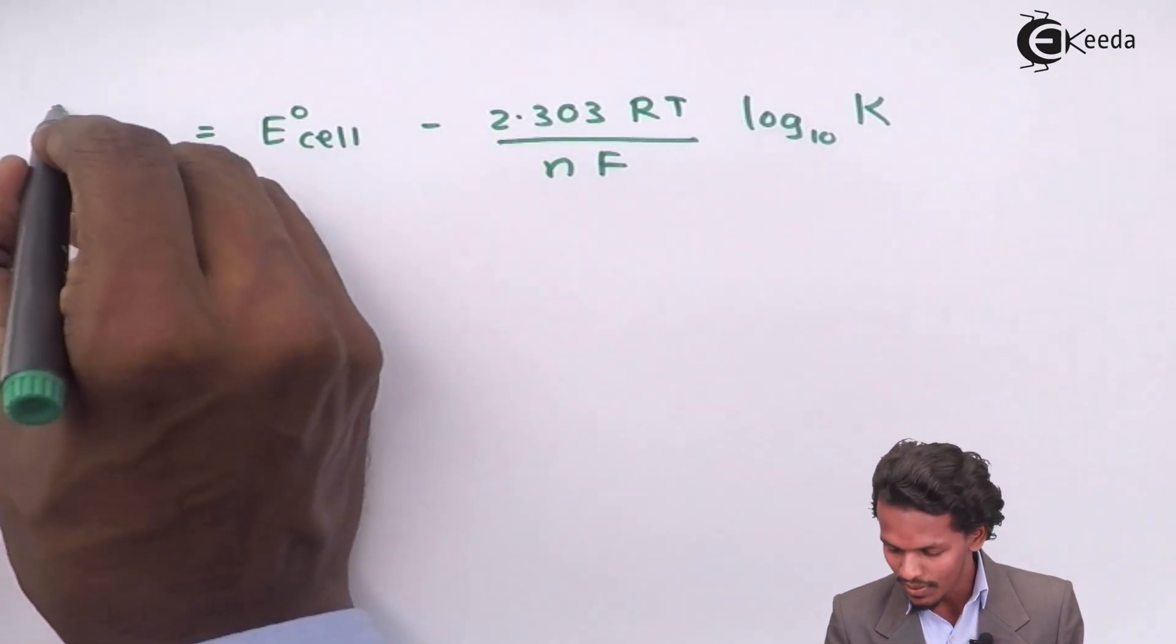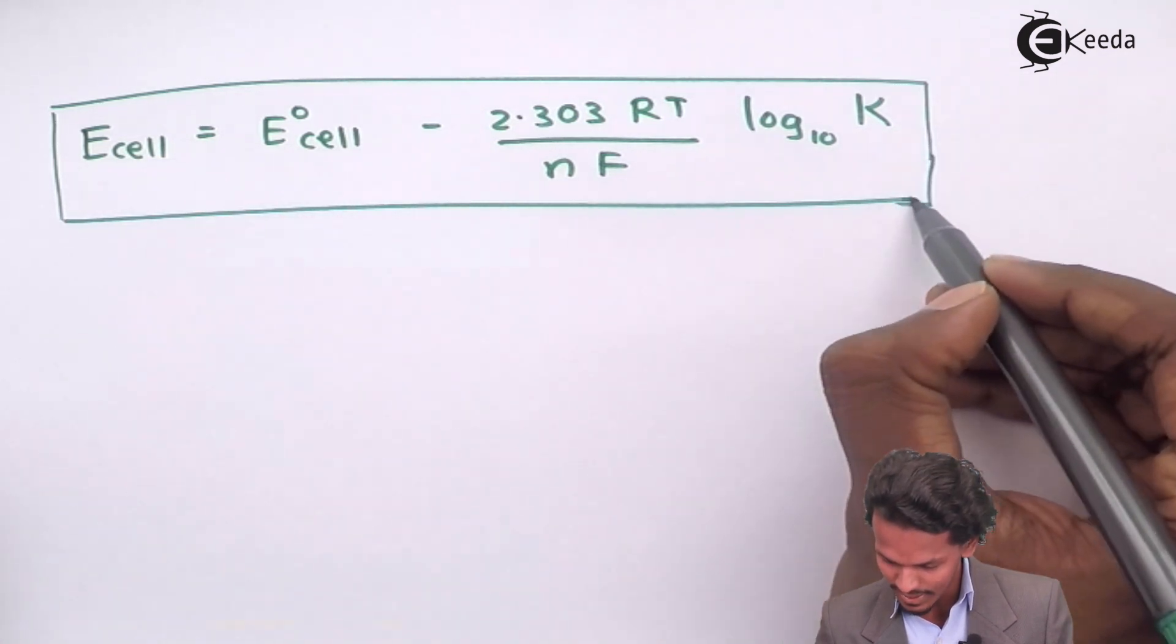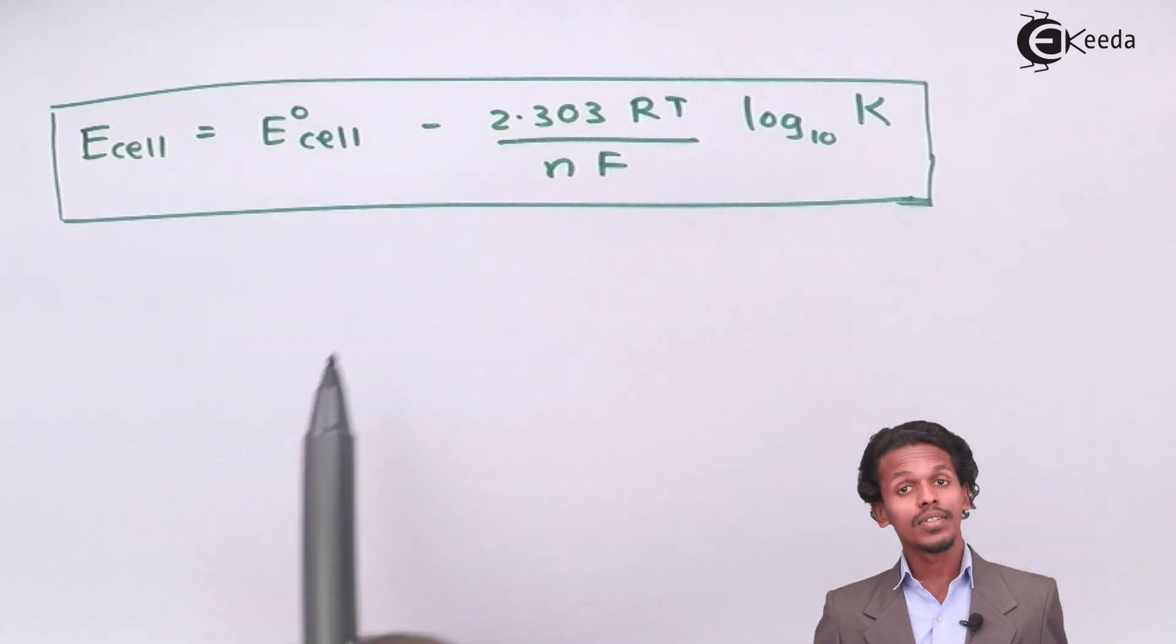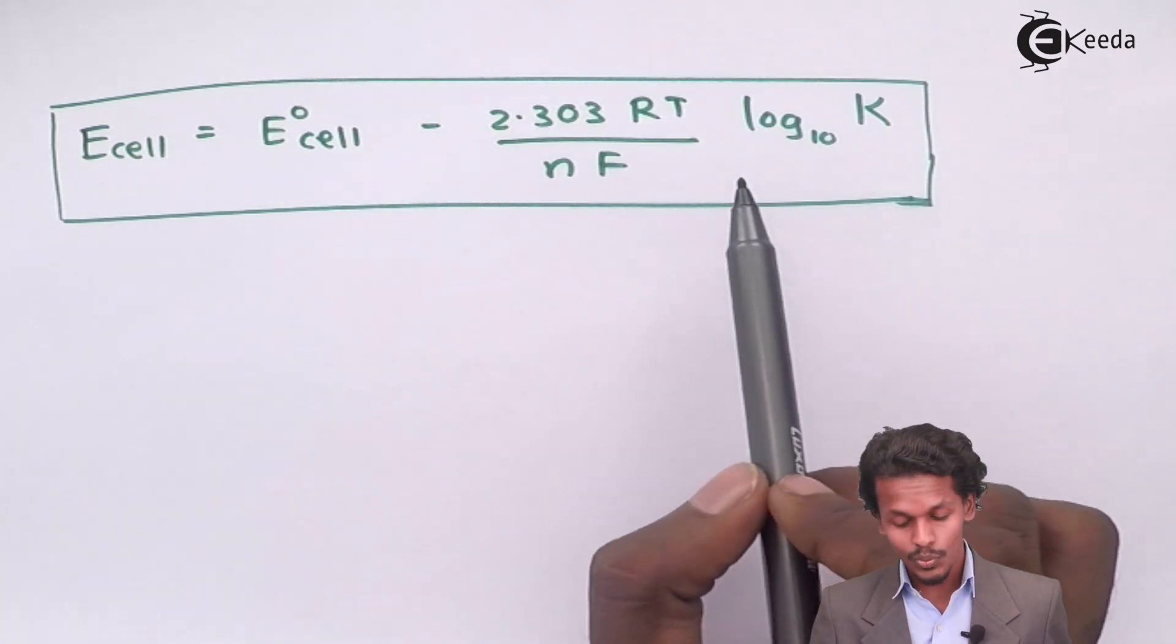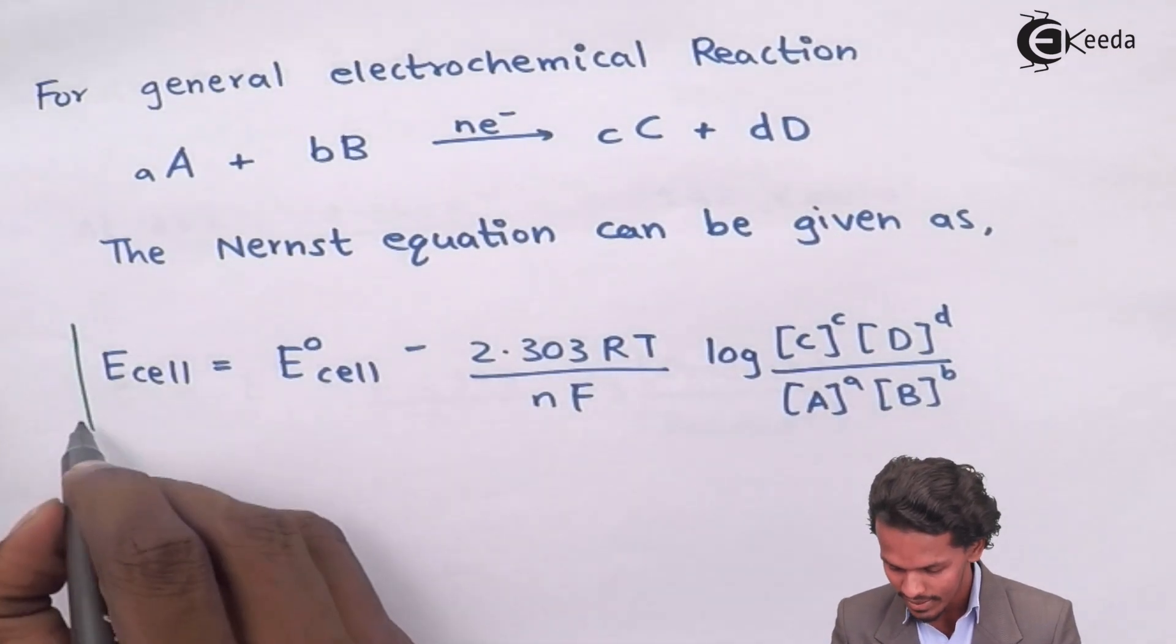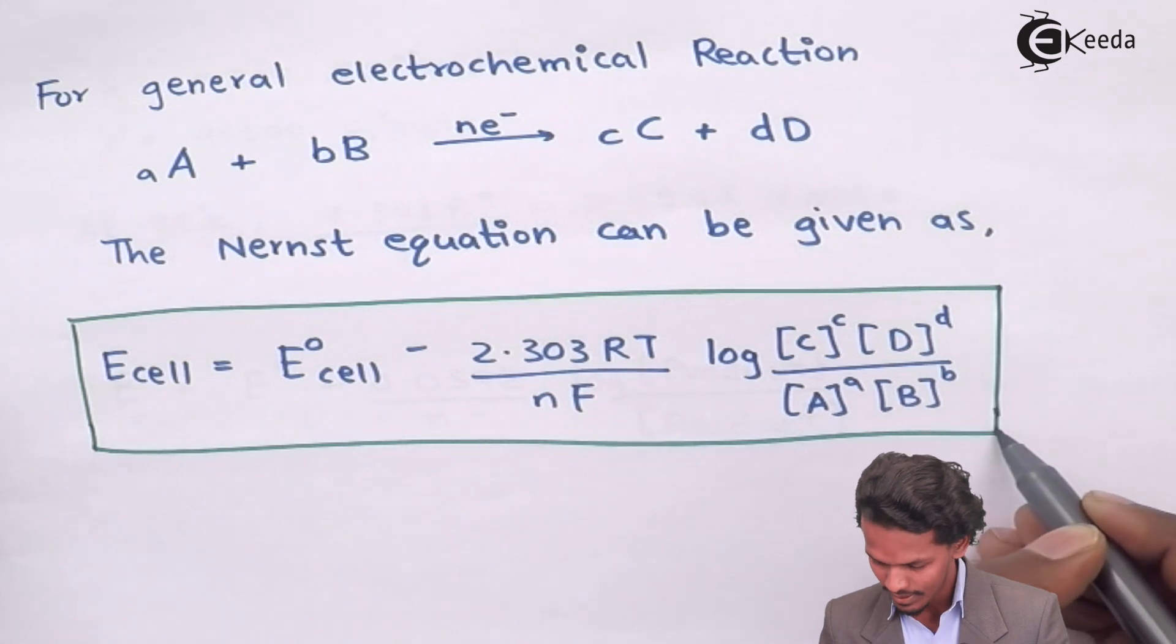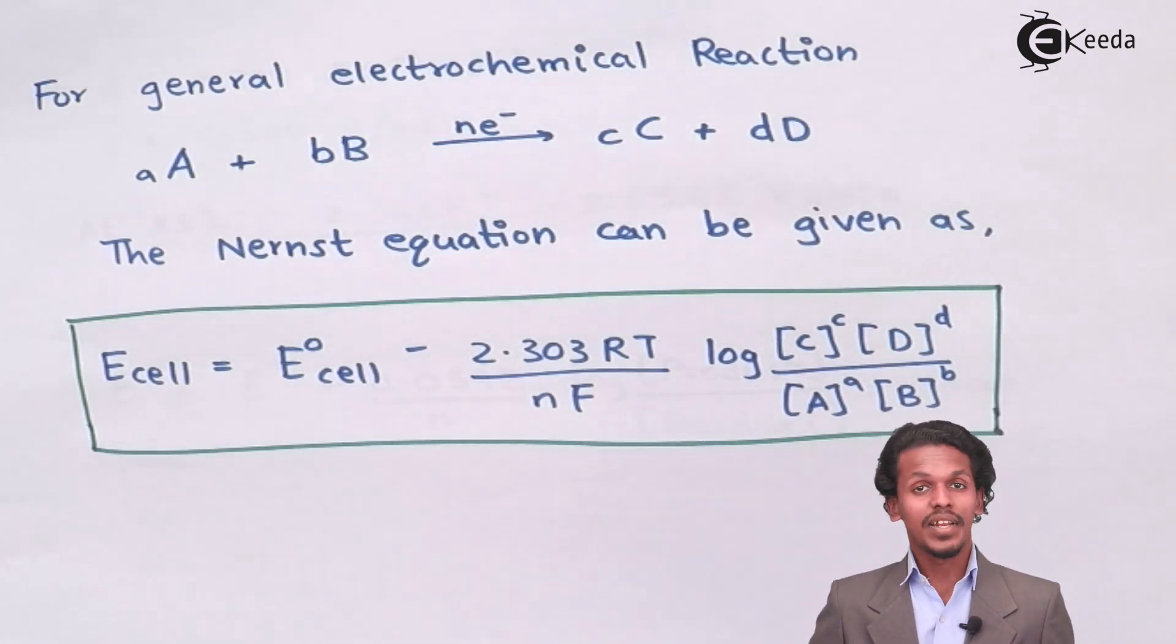So this is how we could represent or we will say about Nernst equation. Even though I can write the formula as this one, or for better convenience, I could write the formula as very simple.